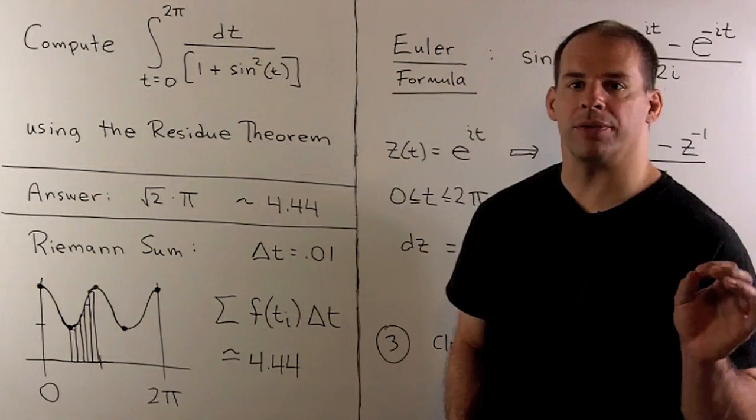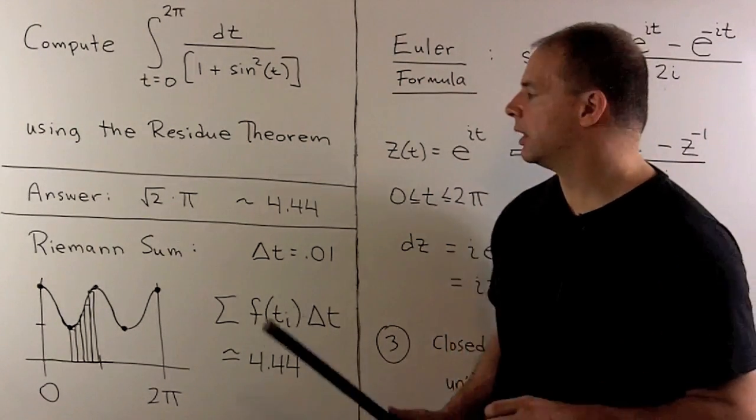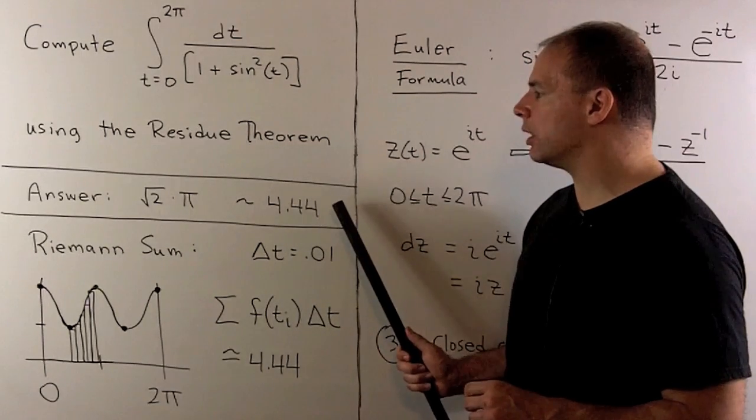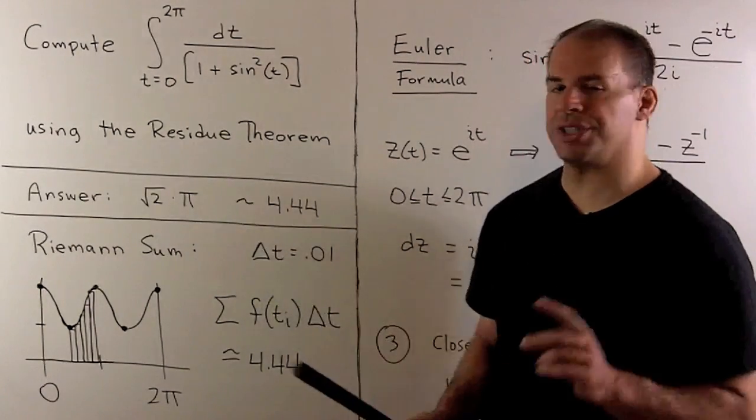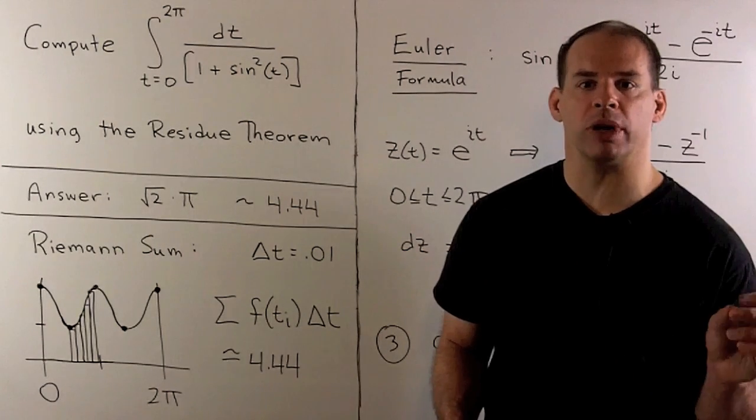Our precise answer, square root of 2 times π, is roughly 4.44. Since our precise answer seems unlikely, let's check it with a Riemann sum.